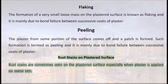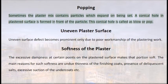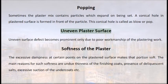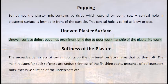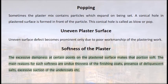Rust stains are sometimes seen on plastered surfaces, especially when plaster is applied on metal lath. Popping occurs when the plaster mix contains particles that expand on being set, forming a conical hole called a blow or pop. Uneven surface becomes prominent due to poor workmanship. Softness of the plaster occurs due to excessive dampness; main reasons include undue thinness of finishing coats, presence of deliquescent salts, and excessive suction of the undercoats.